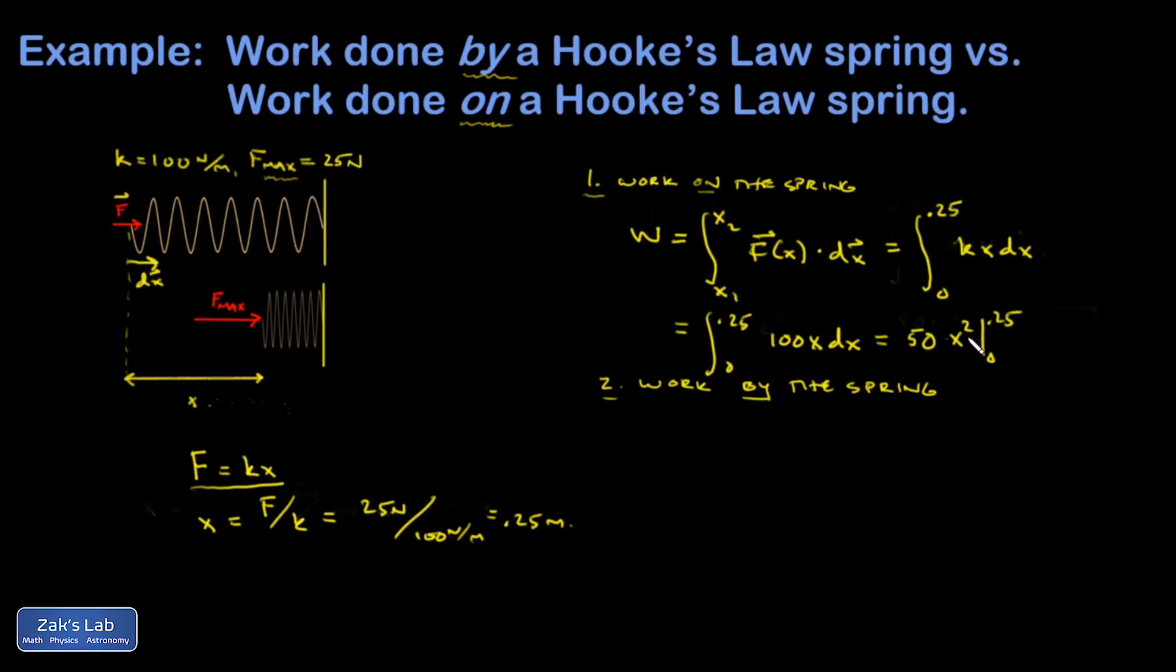When I plug in the lower limit I get nothing, so all that matters is that upper limit. When I do 50 times 0.25 squared, I get 3.125 joules.